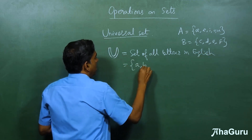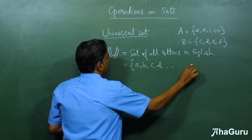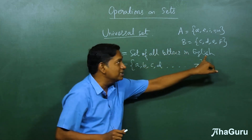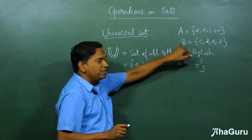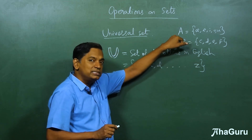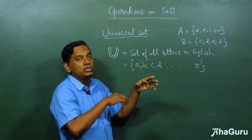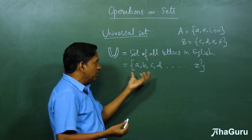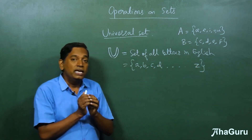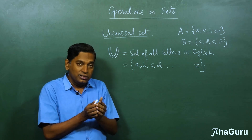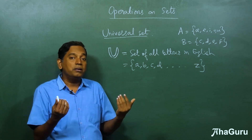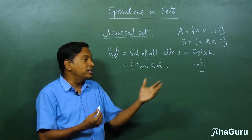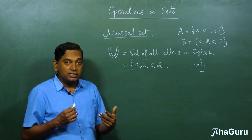So A, B, C, D, etc. till Z would be the universal set. Instead of just having sets A and B, suppose you have sets C, D, etc., and you do C union D or A intersection D — all of them will be subsets of the universal set. In a particular context, the universal set should encompass every kind of set you can possibly come up with using these operations.